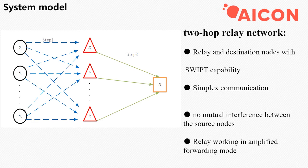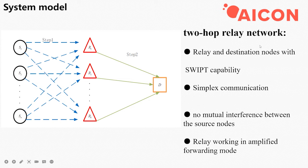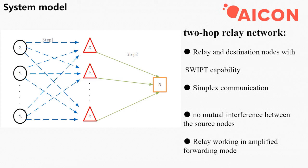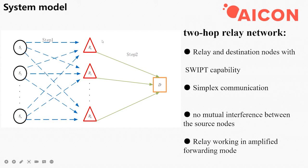Here is the system model. As shown in the figure, we consider a two-hop network with energy harvesting capability at the relay and the destination node. To simplify the problem, it is simplex communication with no interference between the source nodes, and the relay working in amplify-and-forward mode.